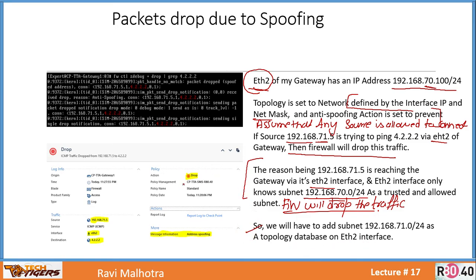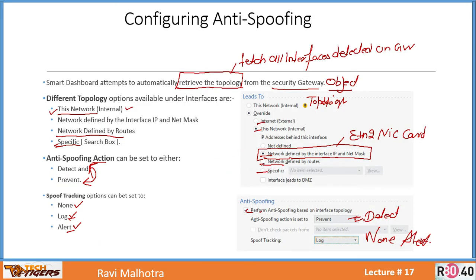So we will have to add subnet 71.0 to the topology database on ETH2 to make it work. We need to tell the firewall that 71.0/24 is part of my network. You can do that by adding a route and choosing 'network defined by routes' — meaning all routes associated with ETH2 will be part of anti-spoofing. Or more granularly, you can choose 'specific' — create a network group object, add specific network objects into it, and call that group into the interface topology. This way, even if you have 100 routes, only those specific subnets are part of anti-spoofing.